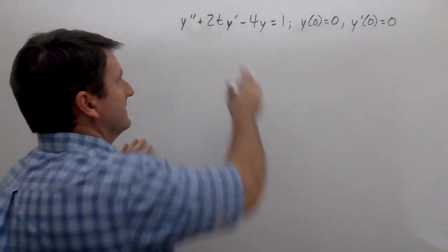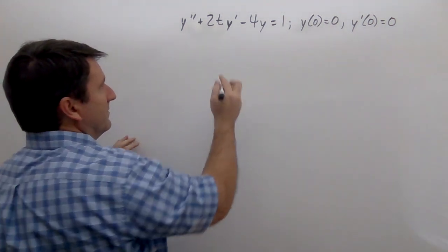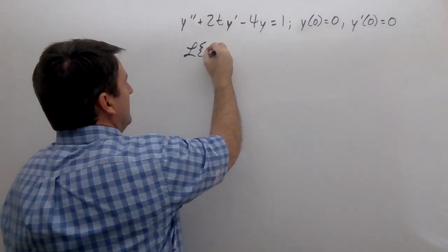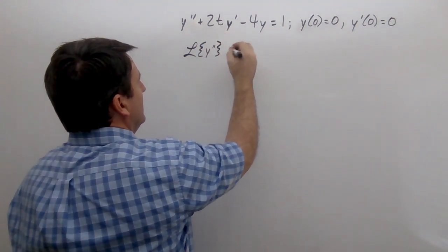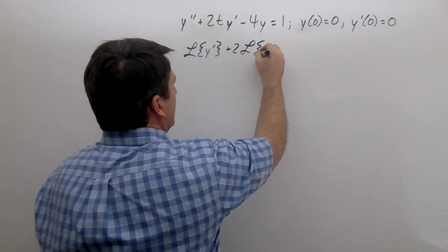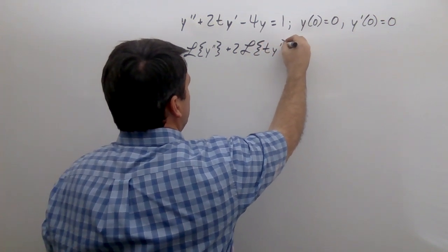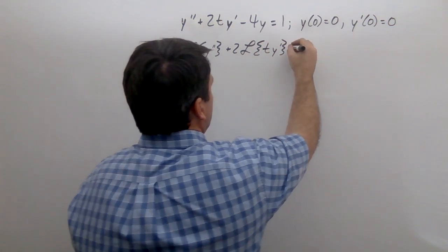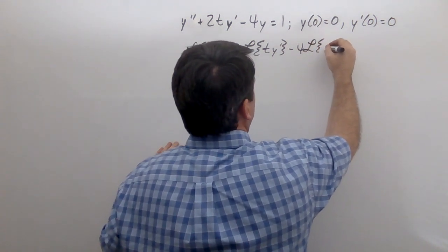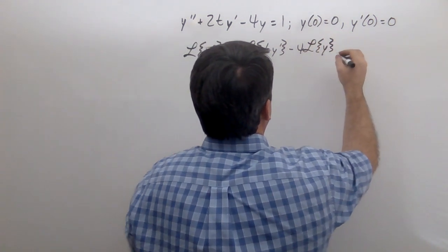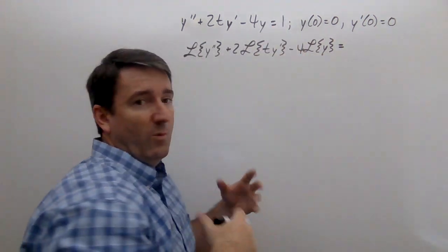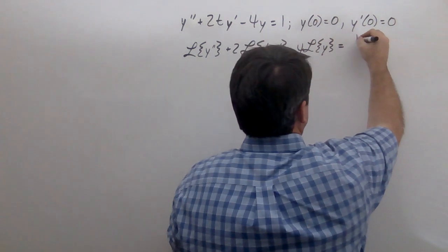So let's start off by taking the Laplace transform of both sides. We get the Laplace transform of y double prime, plus 2 times the Laplace transform of ty prime, minus 4 times the Laplace transform of y, is equal to the Laplace transform of 1, which we know is 1 over s.